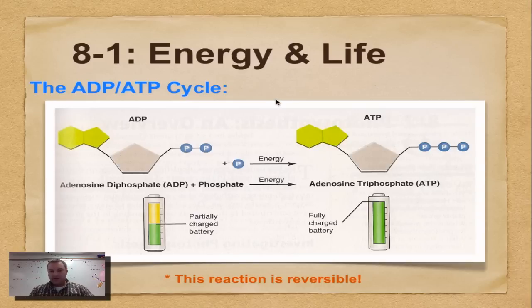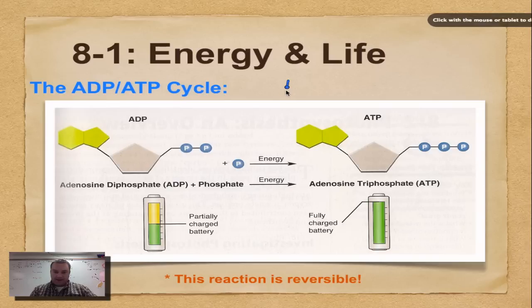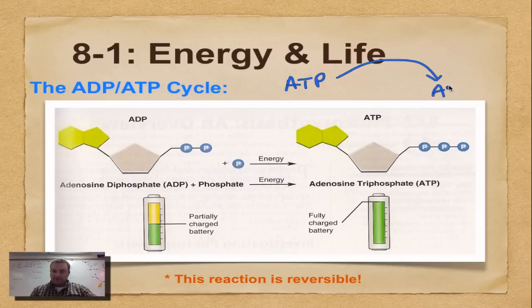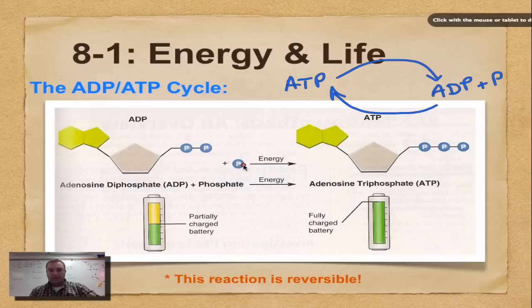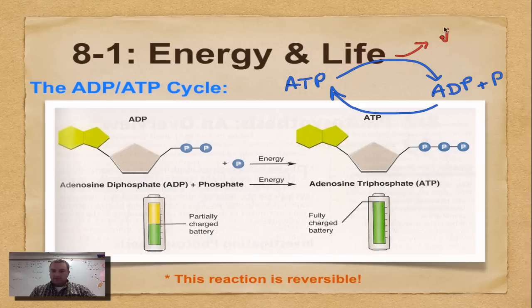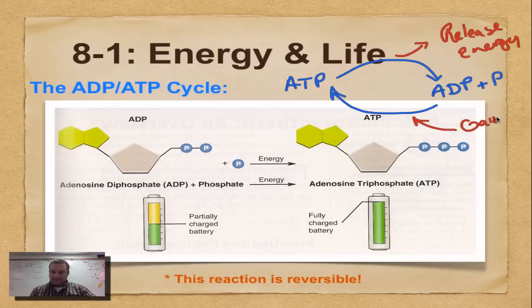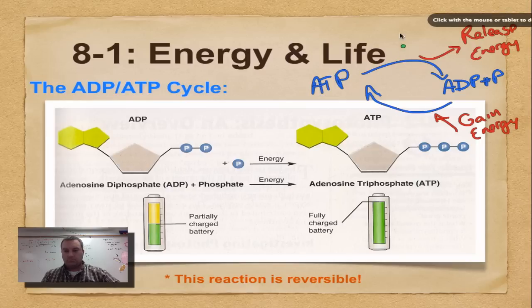The ATP-ADP cycle works like this. You've got ATP over here, and it's going to release energy. When it releases energy, it becomes ADP plus a P. And then when it gains energy, it goes back to ATP. So this would be release energy, and this one would be gain energy.